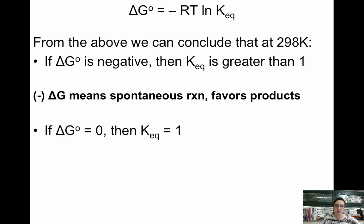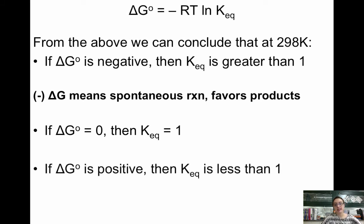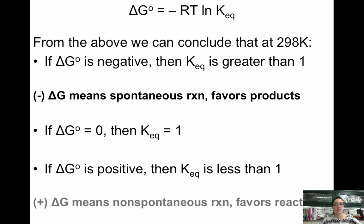If delta G not equals 0, then KEQ equals 1, because we're at equilibrium. And if delta G is positive, then KEQ is less than 1, because a positive delta G means that it's non-spontaneous and it's going to favor the reactants.